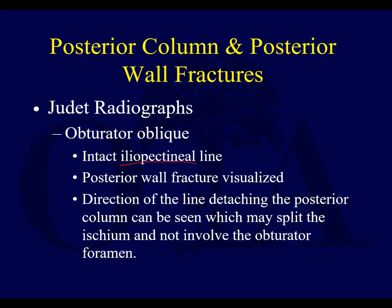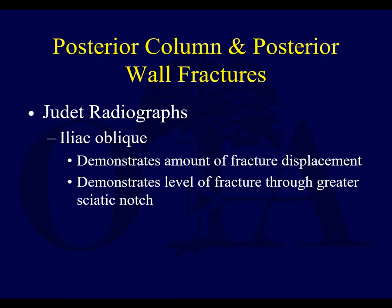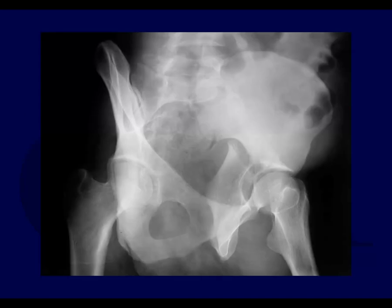The posterior wall fracture is very nicely seen on the obturator oblique. The direction of the line detaching the posterior column can usually be seen, which may split the ischium and not necessarily involve the obturator foramen. On the obturator oblique view, you're going to see the posterior wall fracture — you may get the so-called gull sign if it's displaced. The iliac oblique view shows the posterior column fracture and fracture displacement, and whether it goes through the greater sciatic notch. The posterior column fracture is very clearly seen here, and CT scans will also help show it.